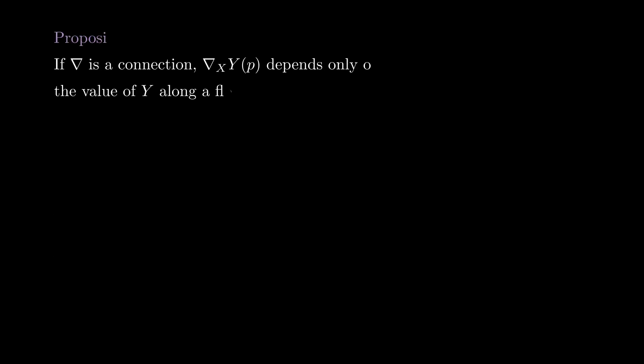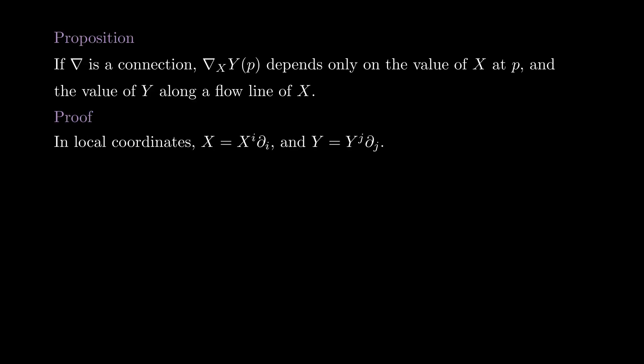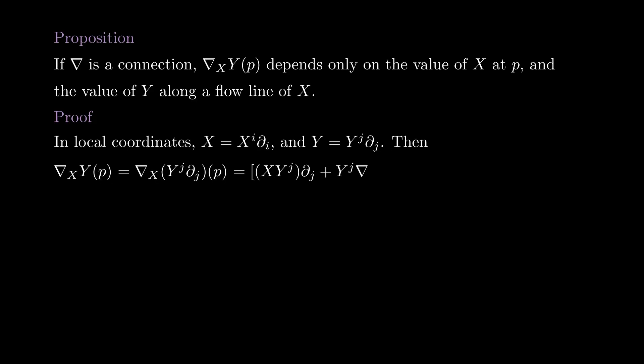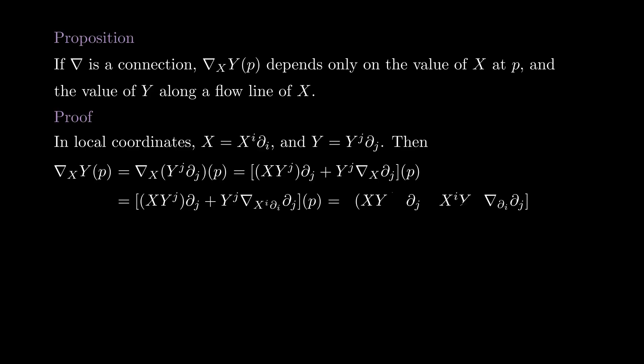The first thing we prove about connections in general is that the value of Nabla at a point P only depends on the value of X at P and the value of Y along a flowline of X starting at P. This is consistent with the fact that it should be the derivative of Y in the direction of X. To prove this, take local coordinates around P and write X and Y in terms of these coordinates. Using the Leibniz rule, we see that the value of Nabla at P is given by this formula. Then we can expand using the C-infinity linearity of X to get this other formula.